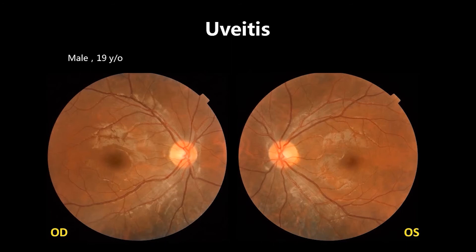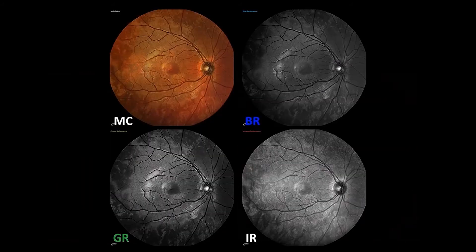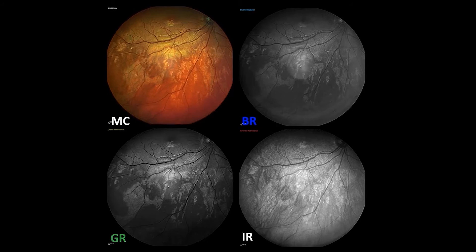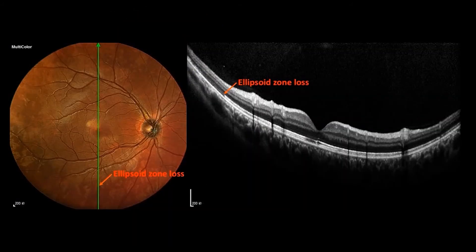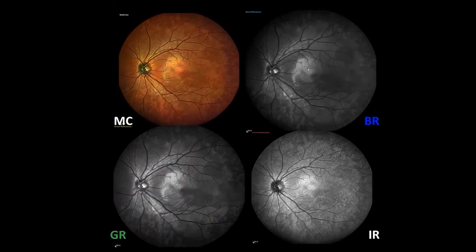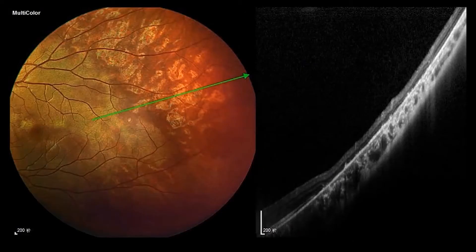This patient has uveitis on both eyes. On color fundus photo, we can only see some abnormal RPE changes in the lower part of the disc. But when we perform 50-degree multicolor imaging, we notice obvious changes of RPE in the mid-peripheral retina on blue, green, and infrared reflectance, as well as multicolor on the right eye. The OCT B-scan across the dark red area on multicolor image showed loss of the ellipsoid zone. The same changes are present on the left eye, and even more obvious in the periphery.